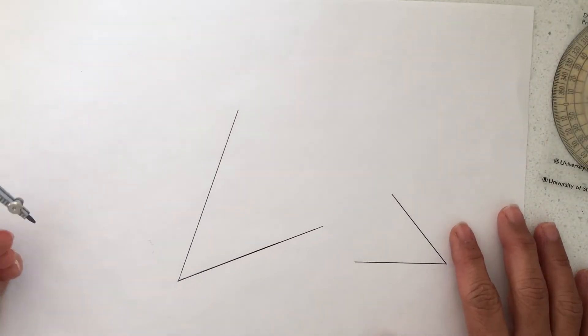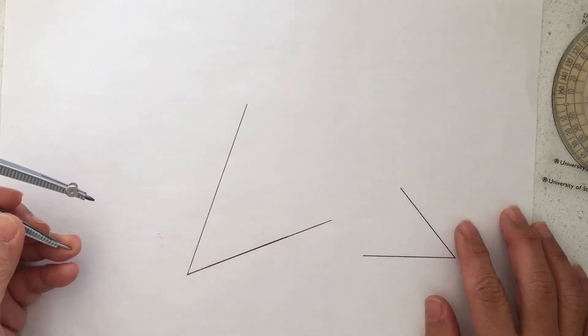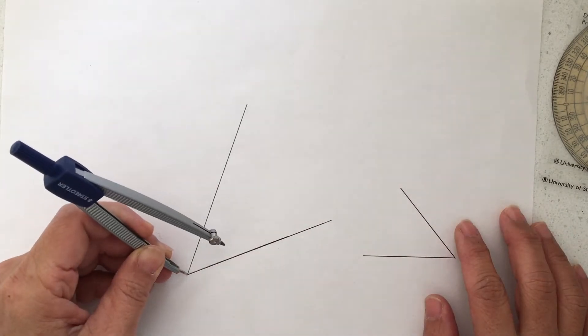Suppose you want to bisect an angle equally. This is what you can do.